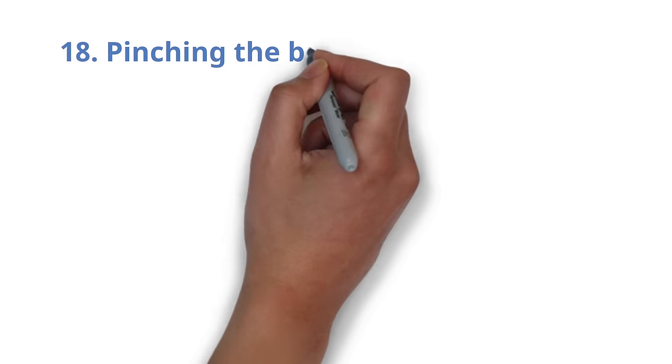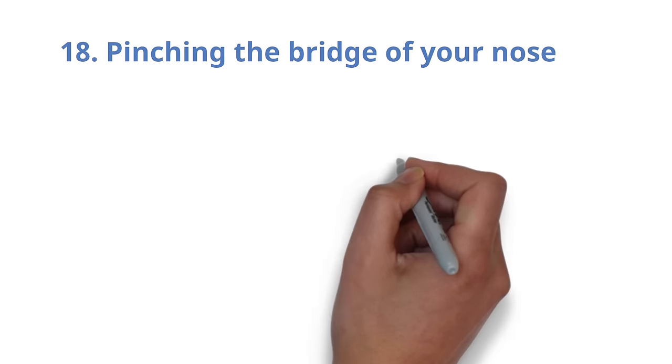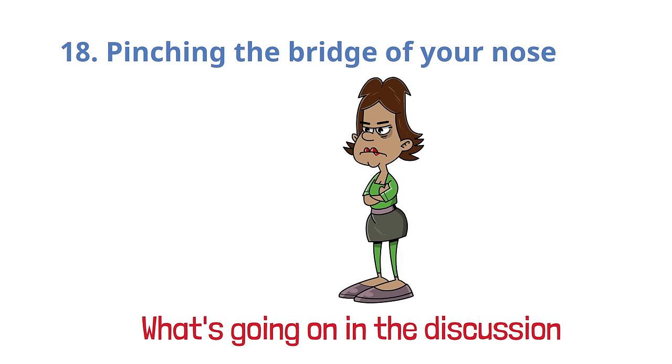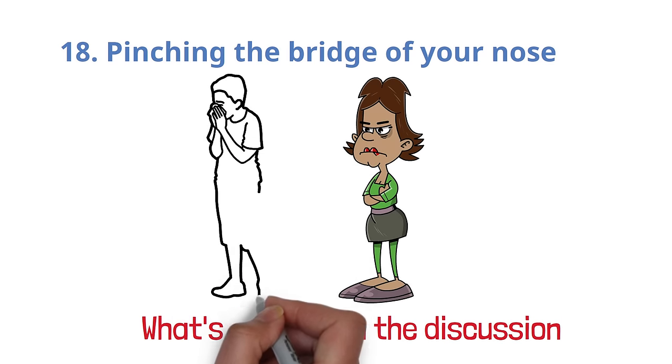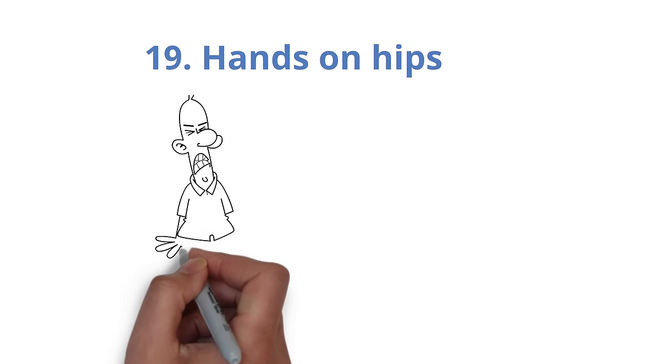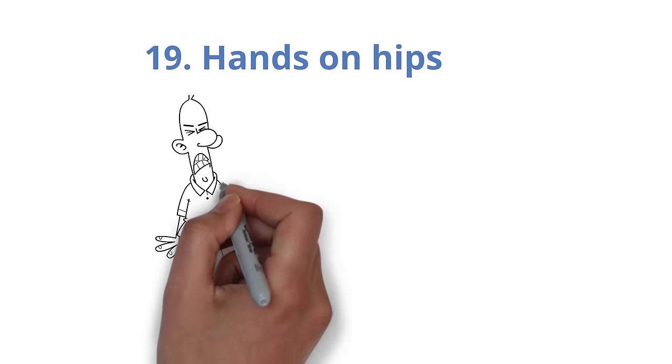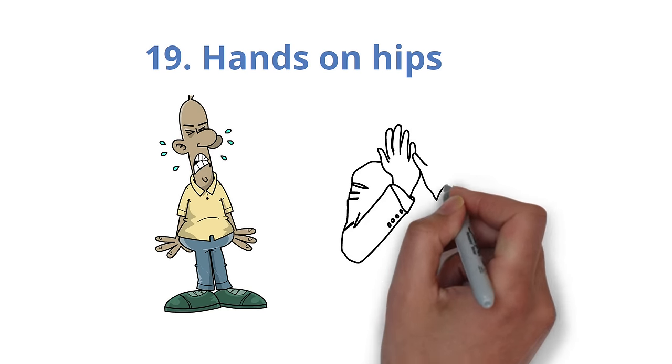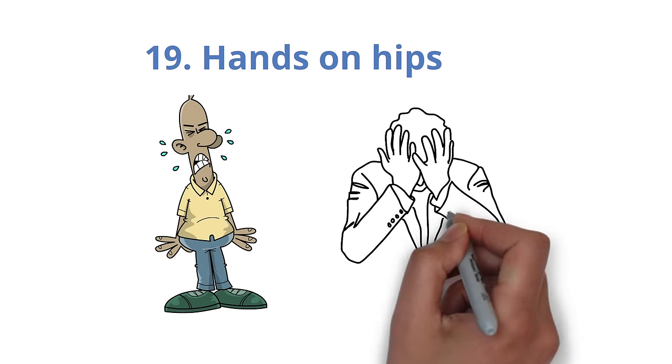Number 18. Pinching the bridge of your nose. You appear to be making an unfavorable assessment of what's going on in the discussion when you close your eyes and pinch the bridge of your nose. Number 19. Hands on hips. It might indicate that you're upset and acting aggressively in some circumstances. In other cases, it might simply suggest that you're fired up and eager to get things done.